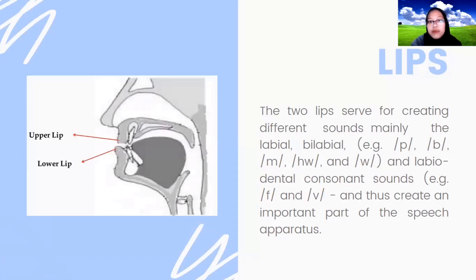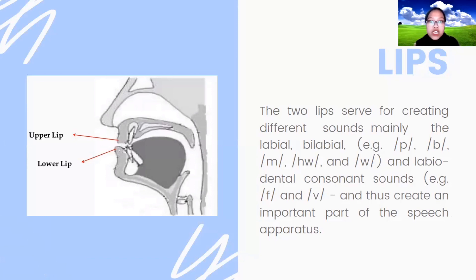The first articulator is the lips. The two lips serve for creating different sounds, mainly the bilabial and labiodental sounds. The labial dental consonant sounds are also included, and thus the lips create an important part of the speech apertures.